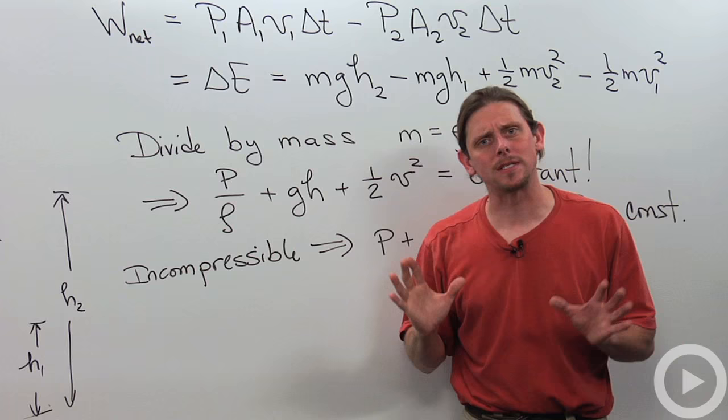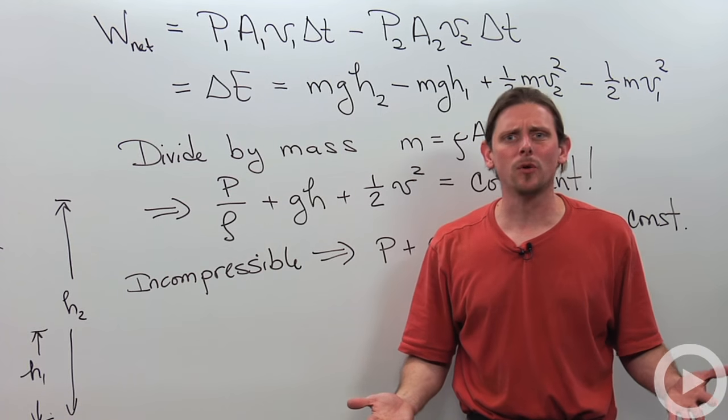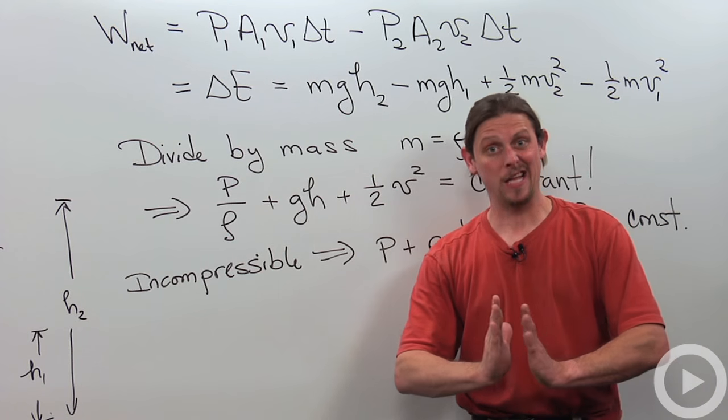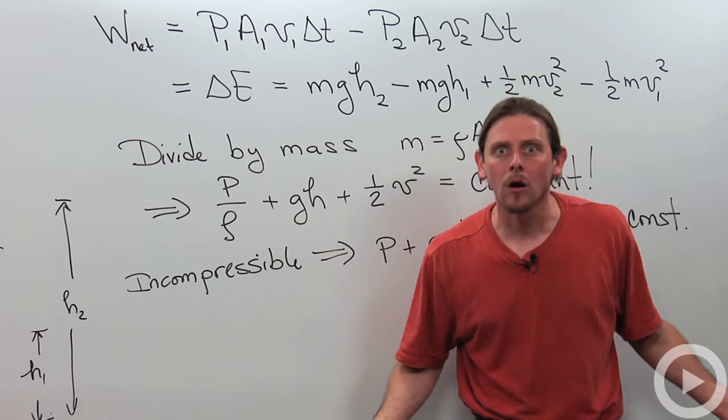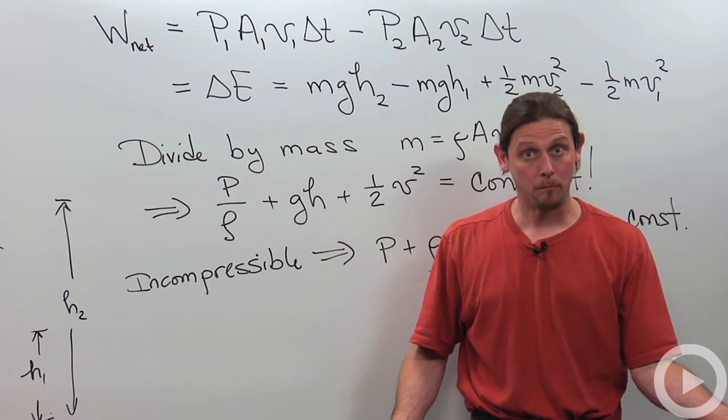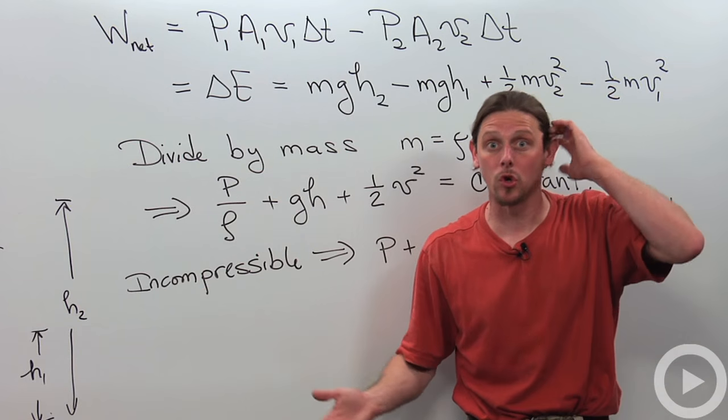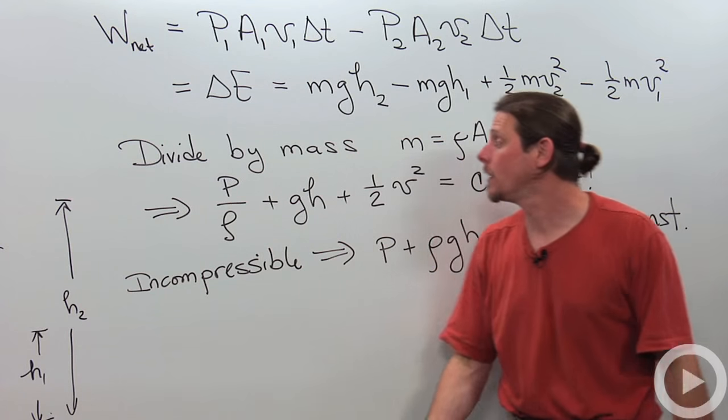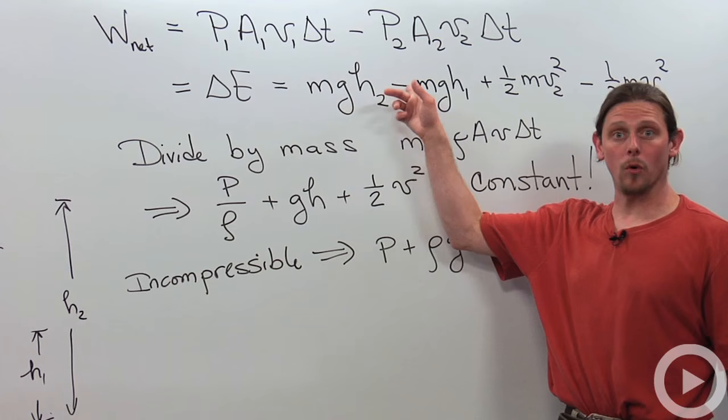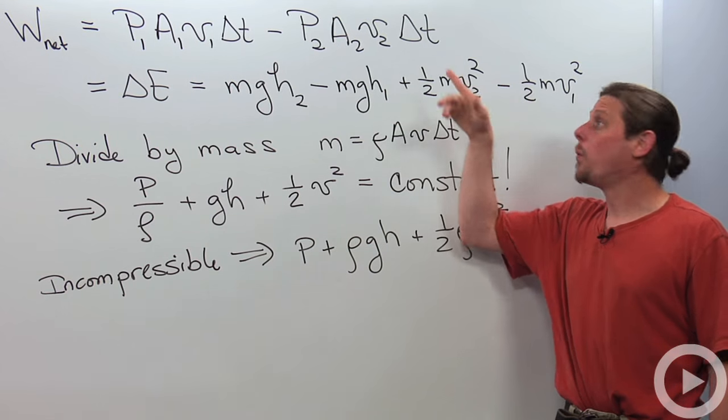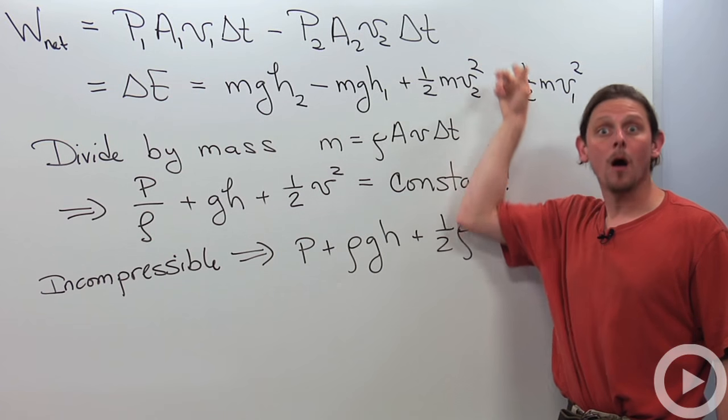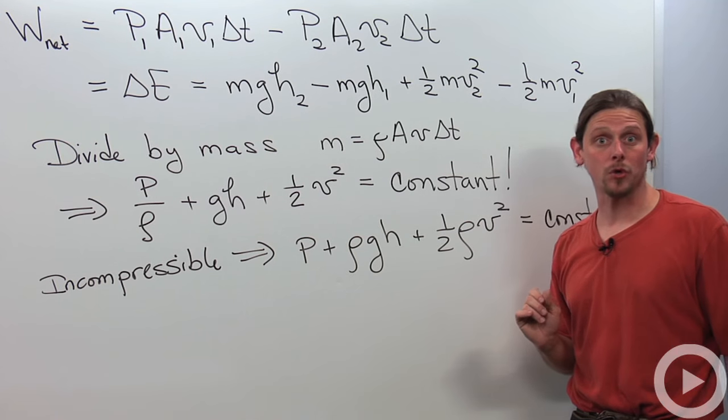That's going to be gravitational potential energy change, so mgh2 minus mgh1. Notice the masses are the same because even if the fluid is compressible, where would the mass have gone? All the mass that was in the bottom part got to go to the top part. So we've got mgh2 minus mgh1 plus the change of kinetic energy: 1 half mv2 squared minus 1 half mv1 squared.